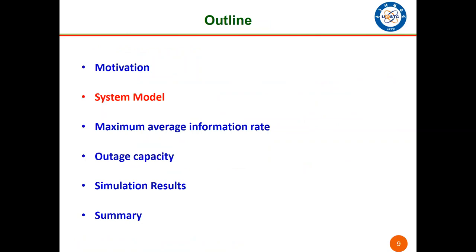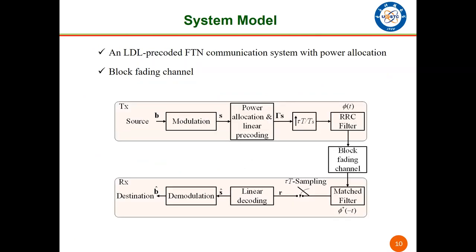Now let's turn to the system model. We consider an LDL pre-coded FTN communication system with power allocation and block fading channel. At the transmitter side, pre-coded symbol vectors are sampled by tau T over T_s times. Then, after the process of the RRC filter, the transmitted signal is passing through the block fading channel.